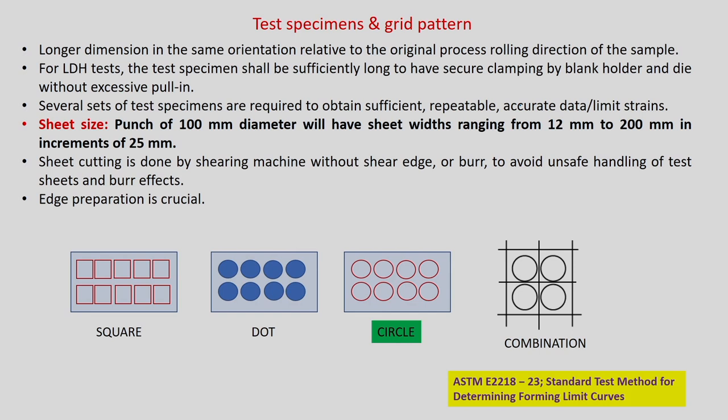Regarding test specimens: the longer dimension in the strain paths is typically along the rolling direction of the sheet. In the LDH test, the specimen should be sufficiently long to allow secure clamping by the blank holder and die without excessive pulling. Several sets of test specimens are required to obtain sufficient, repeatable, accurate limit strain data. One set of 7 sheets may not be sufficient — a second or third set may be needed, giving around 210 data points total, half safe and half localized neck strains.